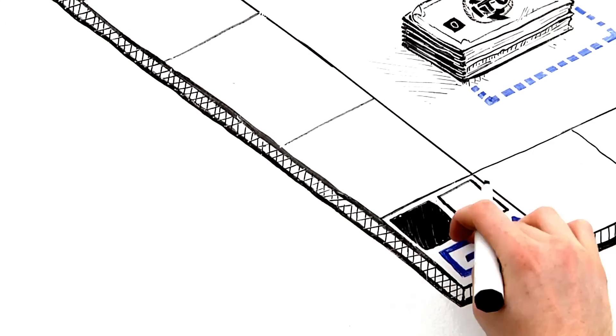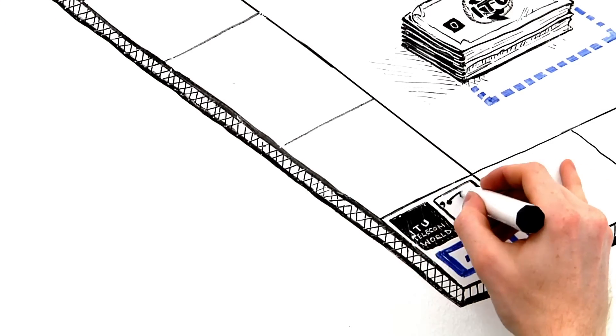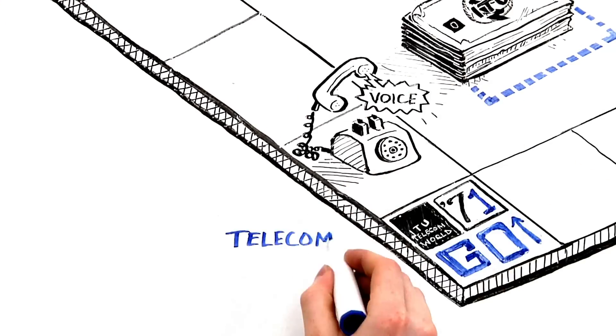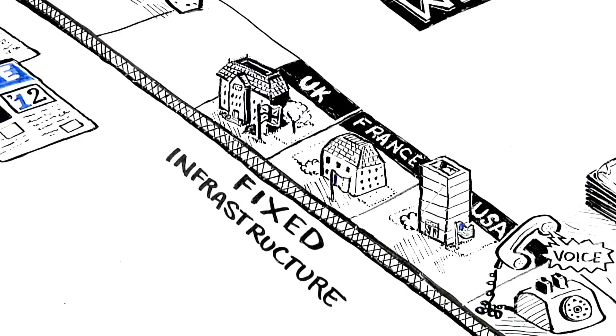Back in 1971, when the first ITU Telecom World event was held, ICT was all about telecoms, voice over a fixed infrastructure, run by national operators out of government departments.